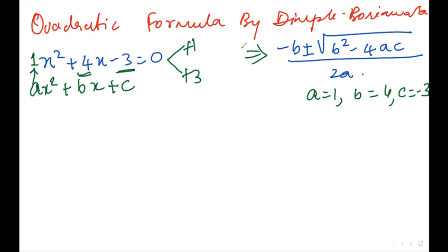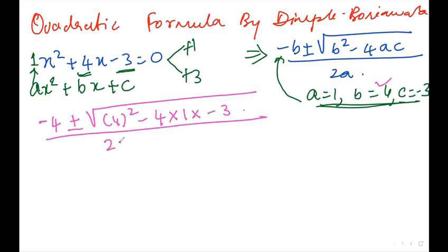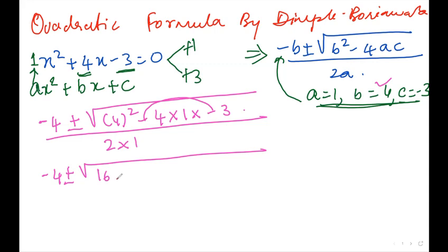The quadratic formula is: negative b plus or minus the square root of b squared minus 4ac, all over 2a. Now you replace these values in the formula. So it is minus b, and b is equal to 4, plus or minus the square root of b squared minus 4 into a is 1 into c is negative 3, over 2 into a is 1. So that gives negative 4 plus or minus the square root of 16 minus minus 12, over 2.